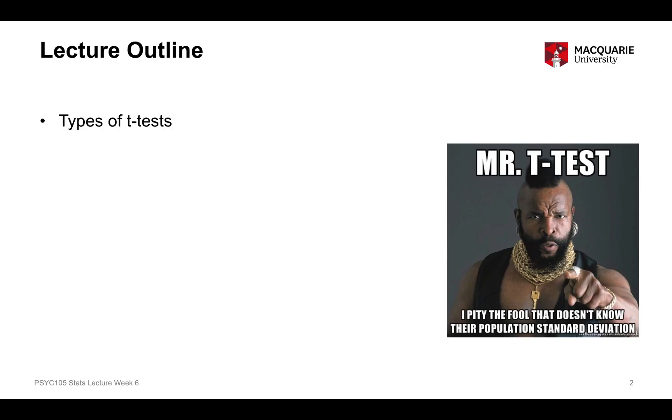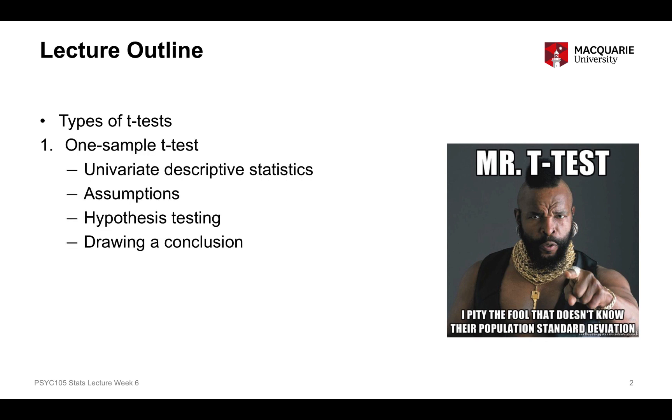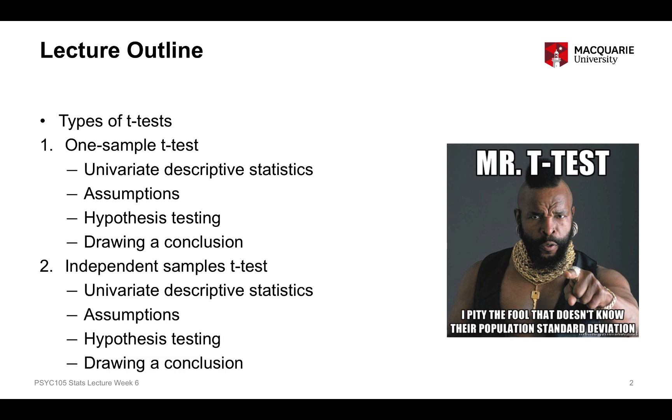Today we'll start by talking about an overview of the three different kinds of t-tests, and then we'll discuss the one sample t-test and the independent samples t-test. For both of these tests, we'll start with describing the data, doing some univariate descriptive statistics, which is just describing a single variable at a time. We'll then discuss the assumptions for each test and how we can check if they are met, then undergo the hypothesis testing process itself, and finish with drawing a wider conclusion.